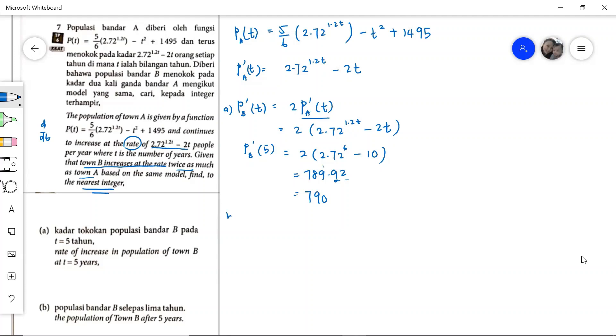Next, let's move on to part B. We have to find the population of town B after 5 years. Let's find P_B(5). The P here is for town B. So how do we do this? If I want to find town B, I integrate.